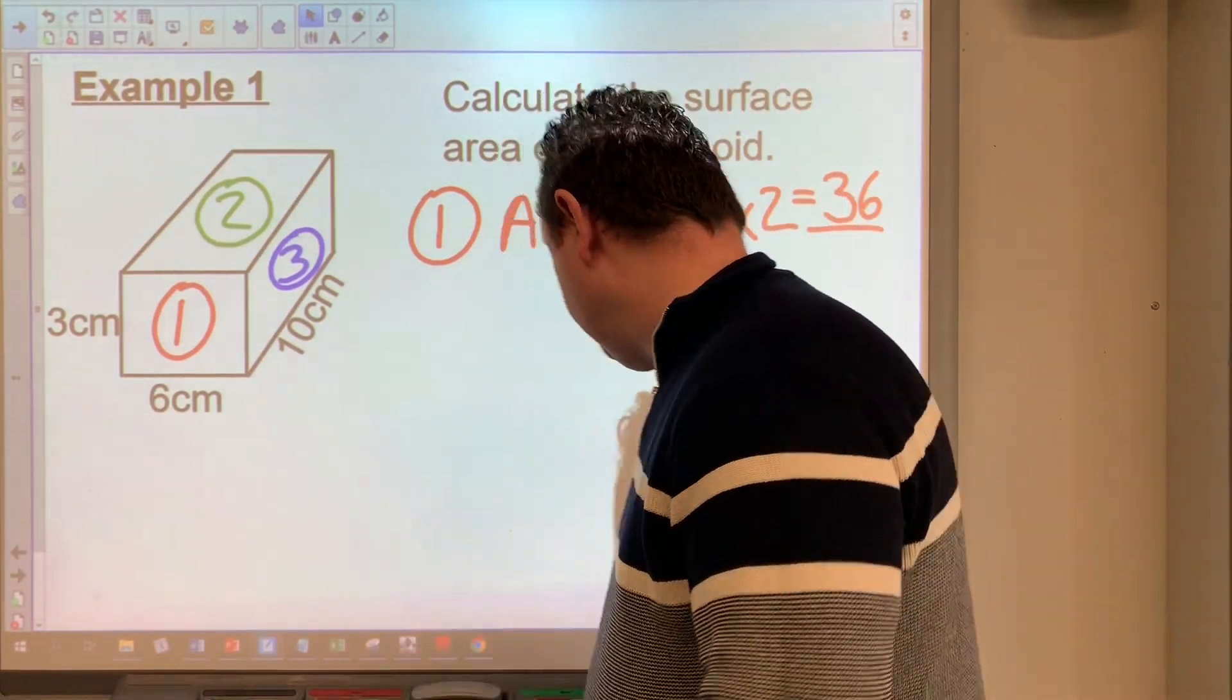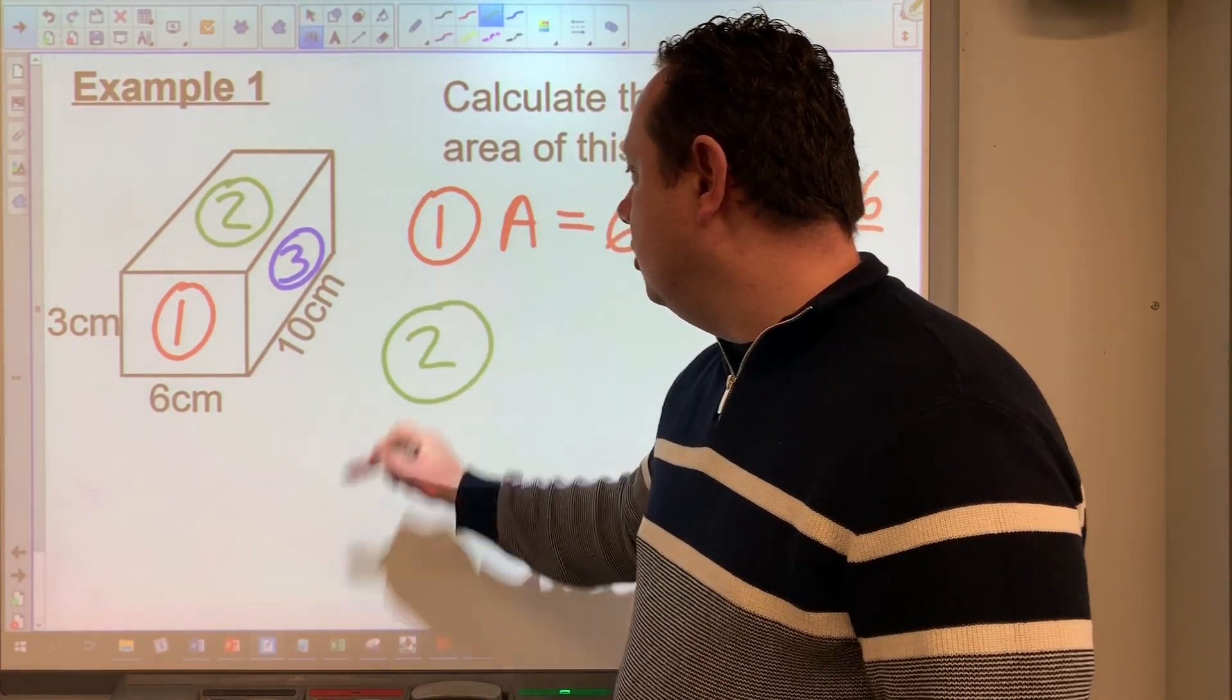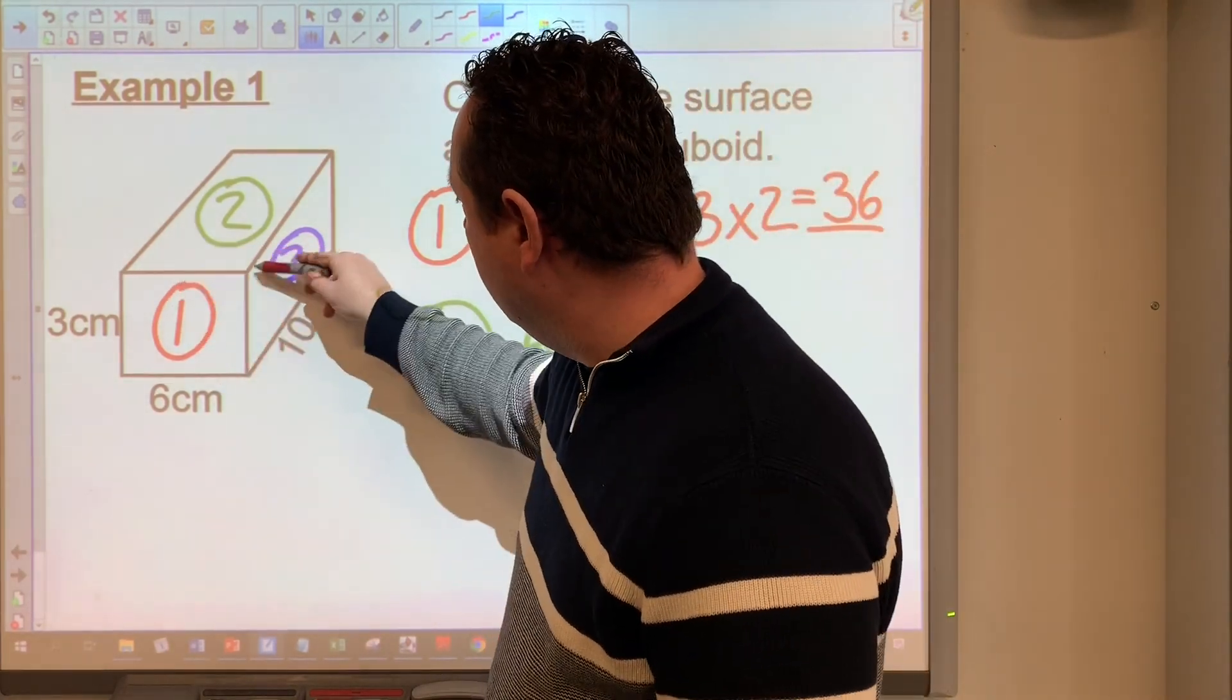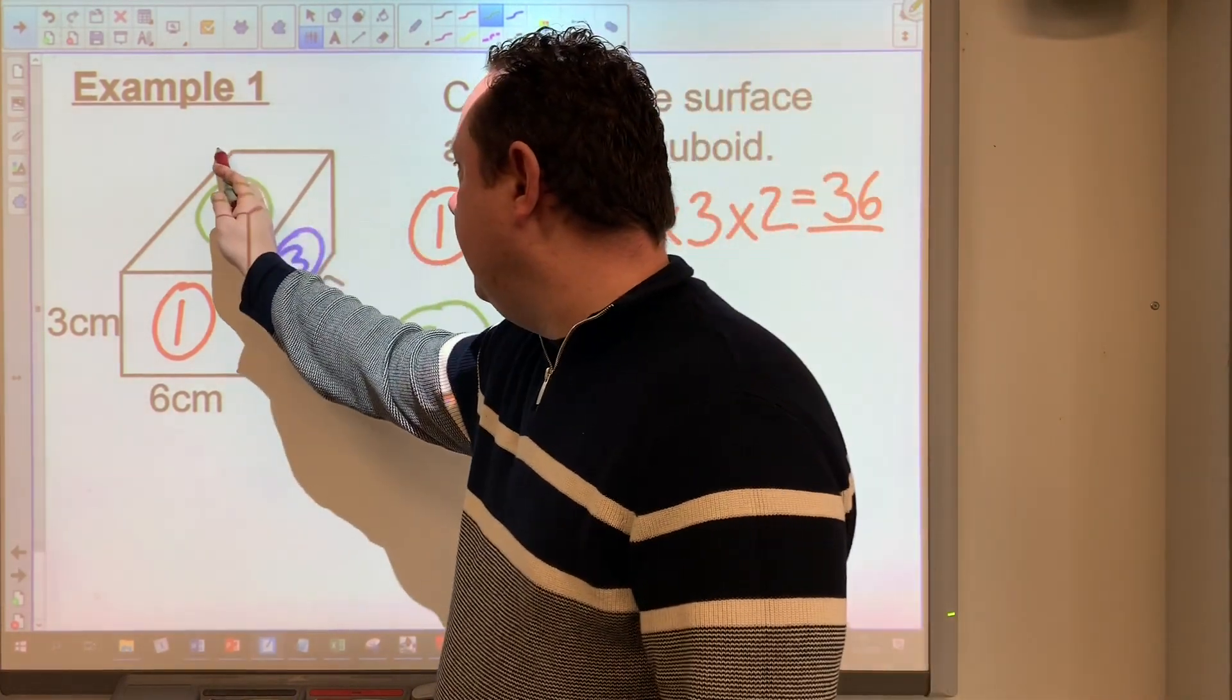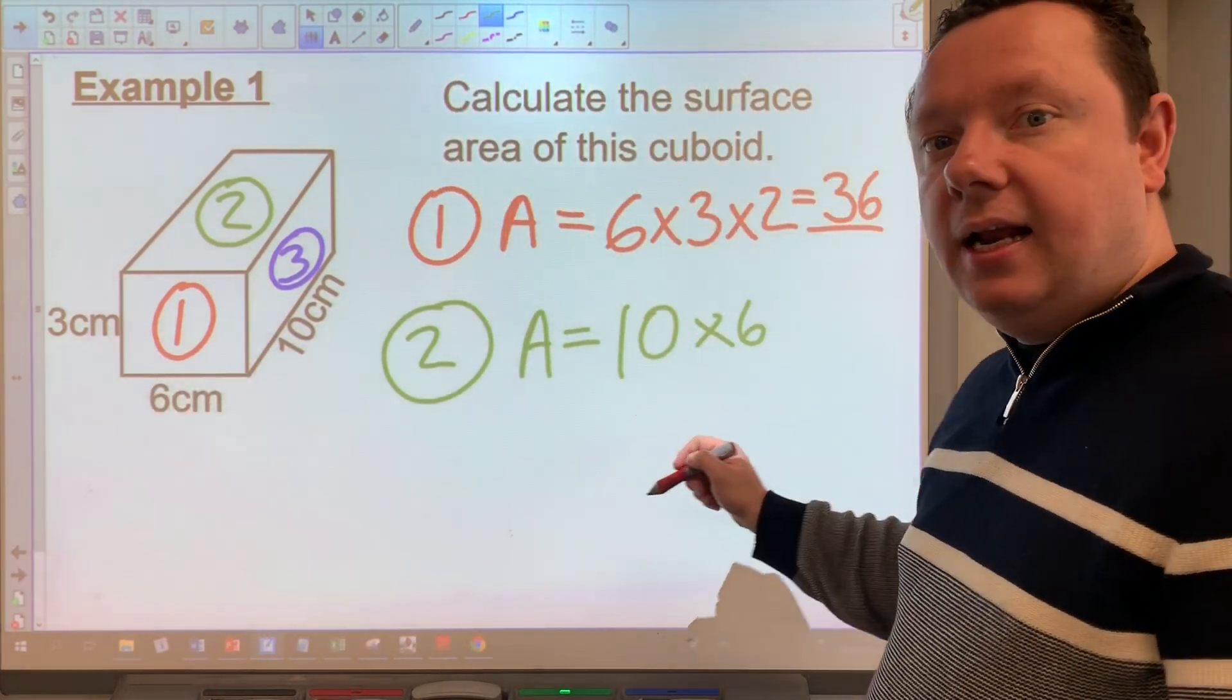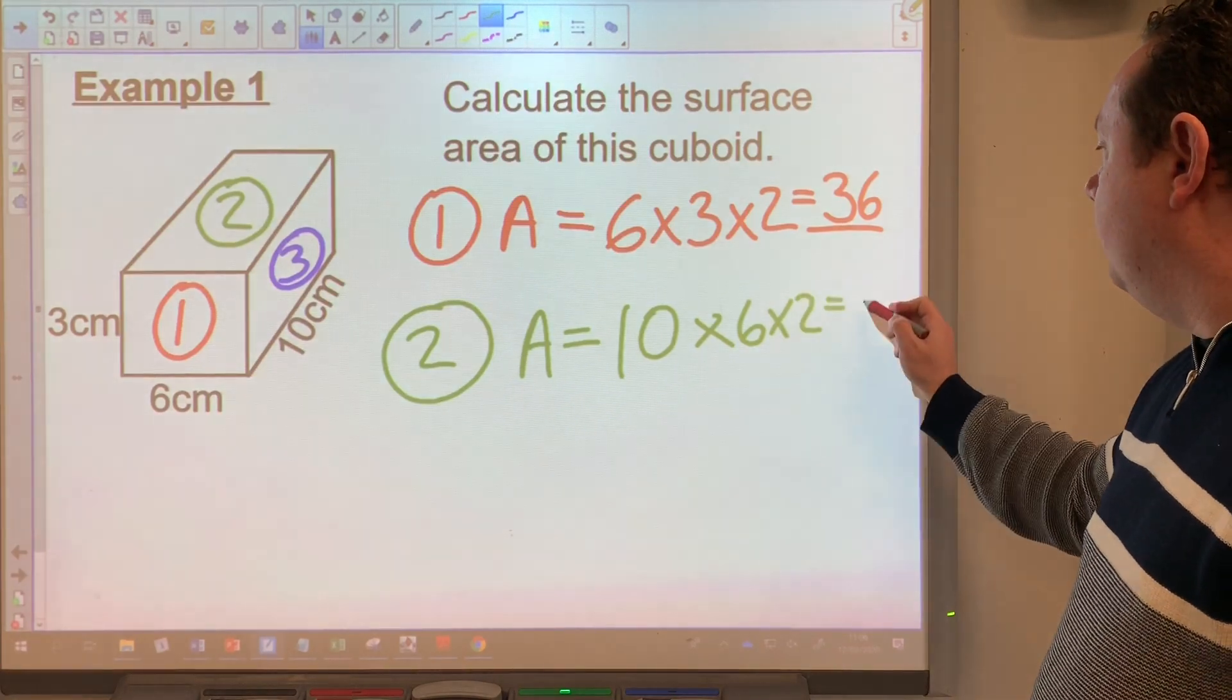So let's look at shape two. That's in green. So shape two, I need area equals, I need the length of shape two. So it's 10 because it's the same as before. I need the other side, six. So it's 10 times six. But again, I need to remember to double the answer because I've got two of each of them. So that's 120.